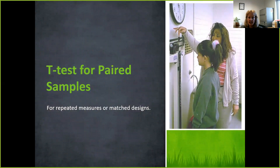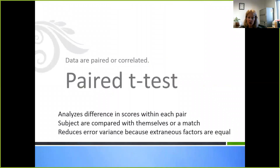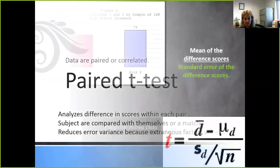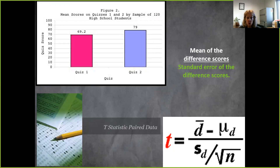The t-test for paired samples can be used for repeated measures or matched designs. The data are paired or correlated, so you use the paired t-test. It analyzes the difference in scores within each pair, and subjects are compared with themselves or a match. It reduces error variance because extraneous factors are equal. The formula is the mean of differences of scores over the standard error of the differences in scores.